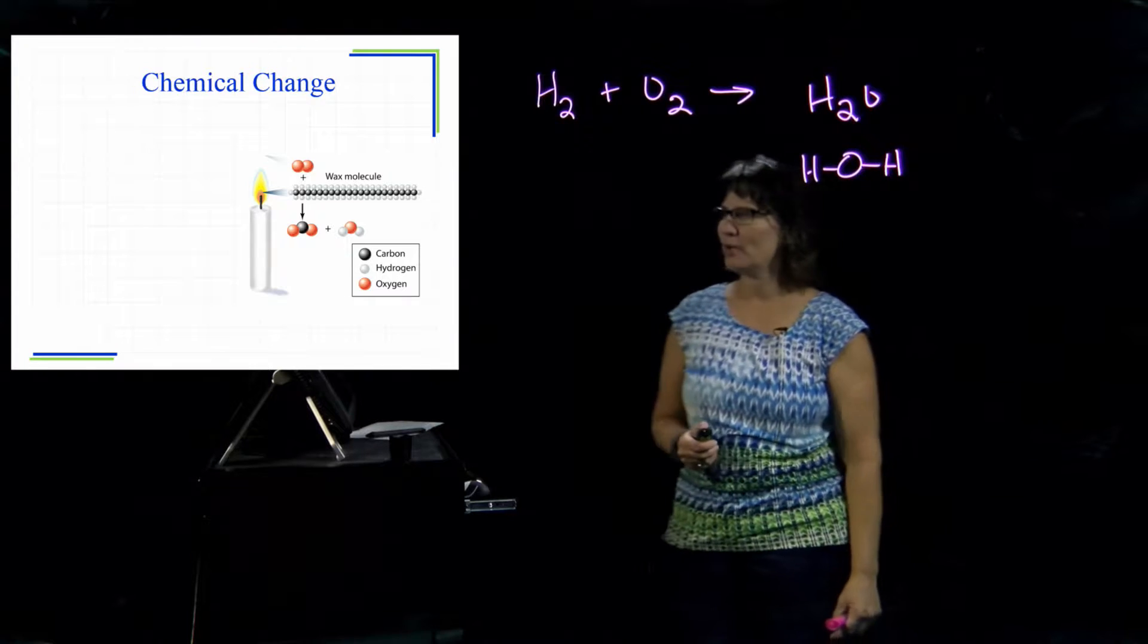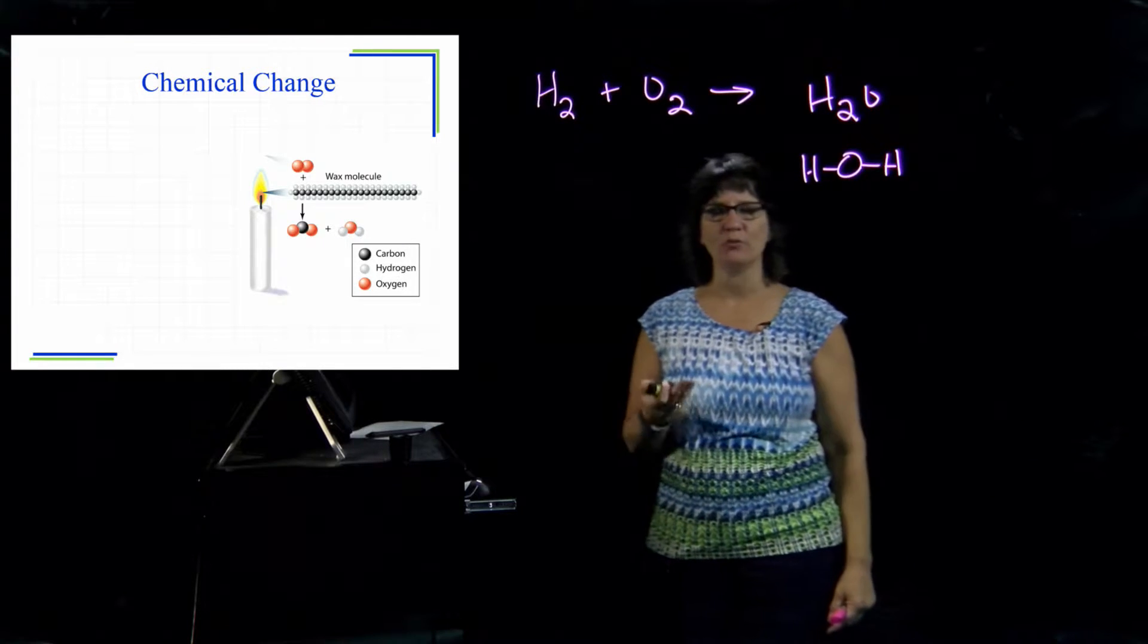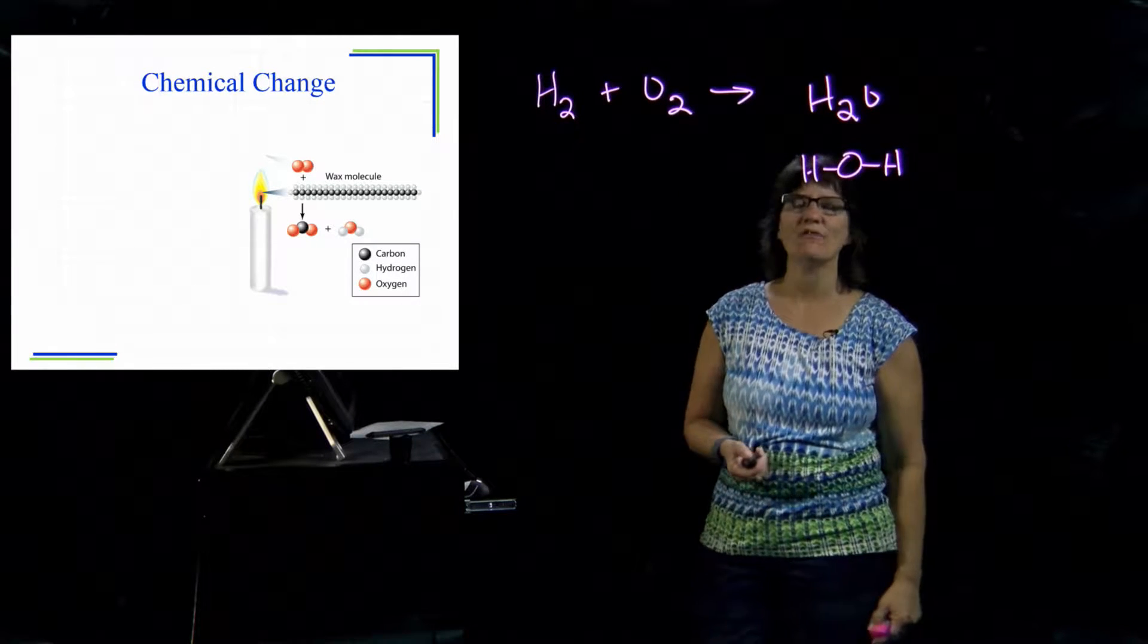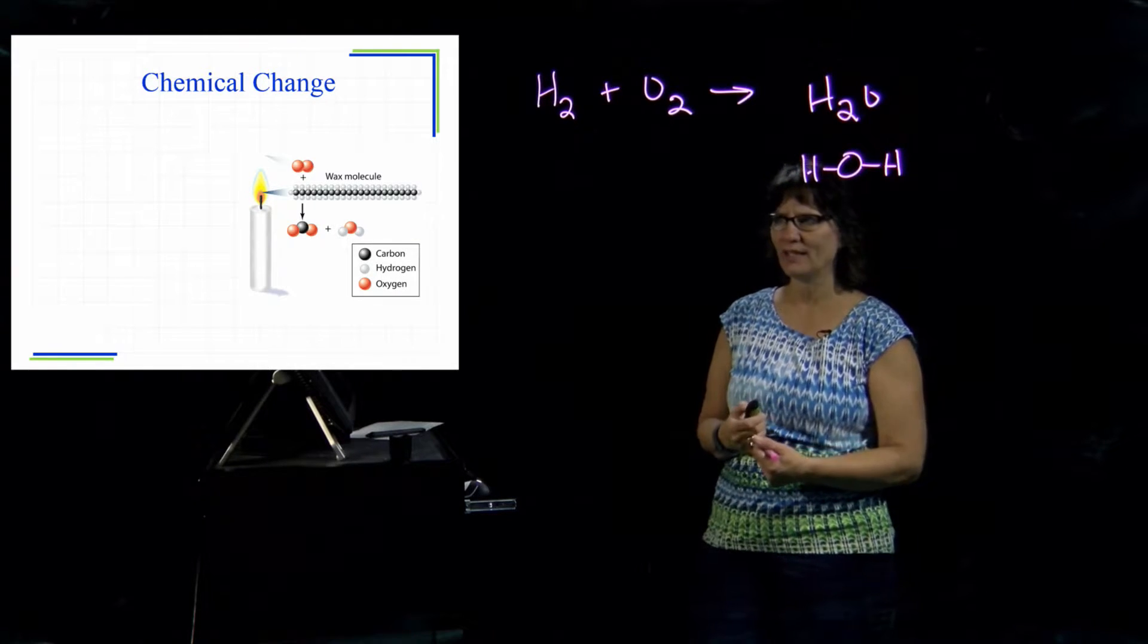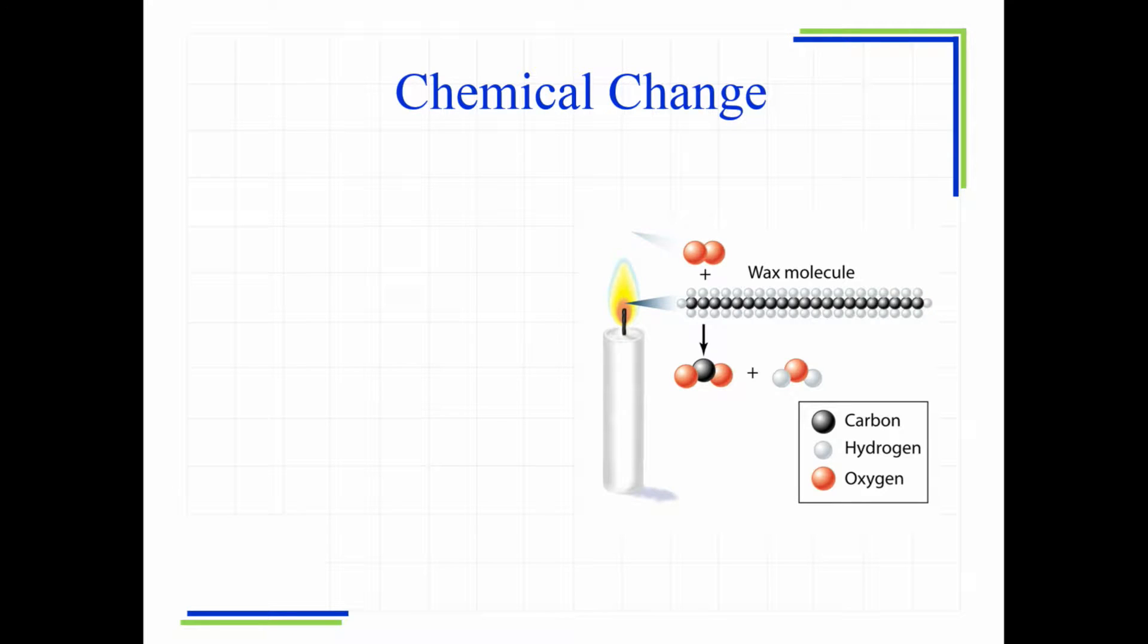Here is an example of a chemical change in which a candle is being burned. Candle is a very long chain, what we call hydrocarbon. It's only made up of carbons and hydrogen. So if you look at the key there, we see that we've got a chain of black running together. And we have, those are the carbons.